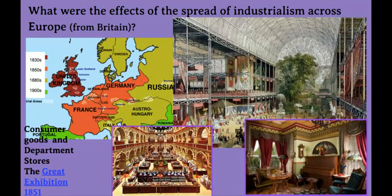First question: what were the effects of the spread of industrialism across Europe — as in the spread of industrialism from Britain outwards into Belgium and Germany, etc.? Mass production during industrialism meant that Europeans could produce more things and nicer things. Prices went down and in places like France, Belgium, Germany, Switzerland, and the Netherlands, consumerism increased.